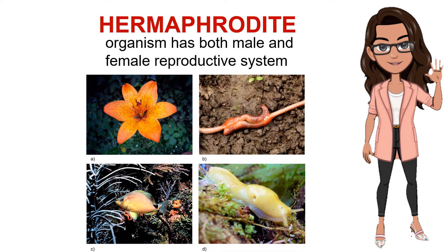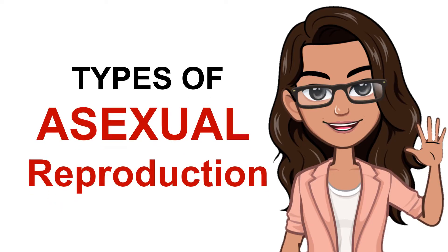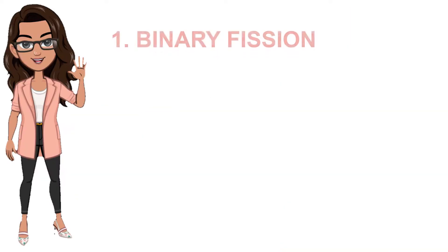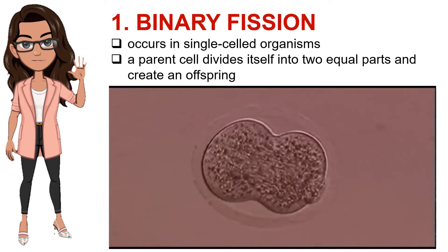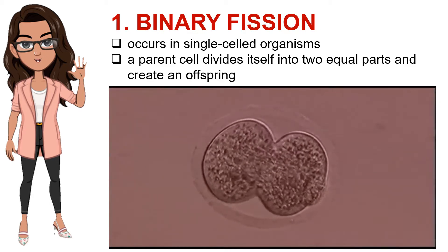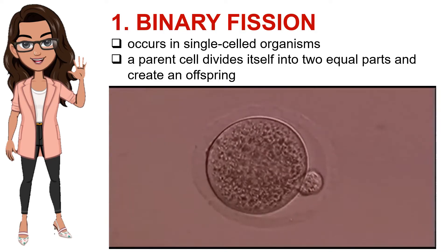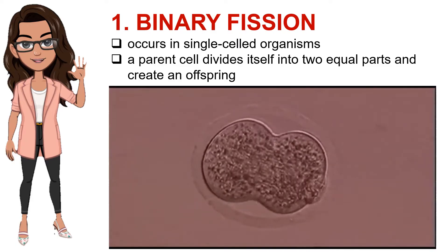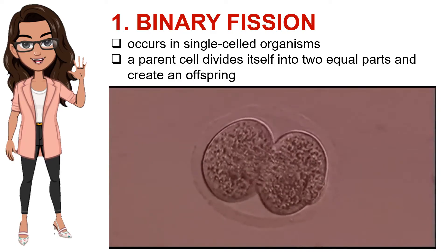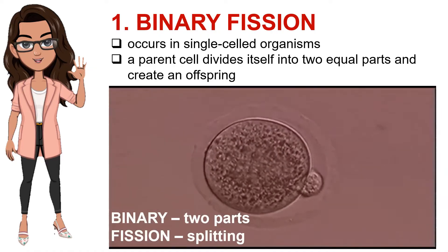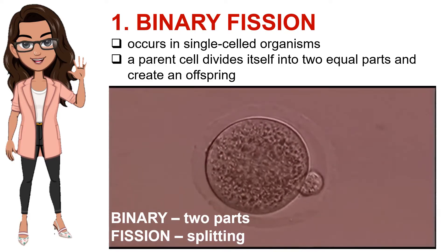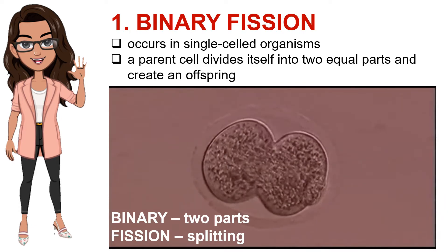Unlike an asexual offspring, a sexual offspring is genetically unique from its parent organisms. Notice how there are two apparent sexes in sexual organisms, while there is no definite sex in asexual organisms. Moving on, let's discuss the types of asexual reproduction. Number one is binary fission — it occurs in single-celled organisms when a parent cell divides itself into two equal parts to create an offspring. This type of reproduction is like cloning. The word binary means something having two parts — bi means two — while fission means the splitting or dividing into two equal parts. For example, bacteria.